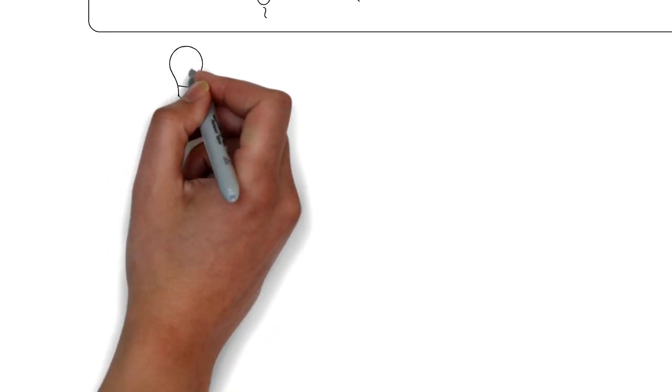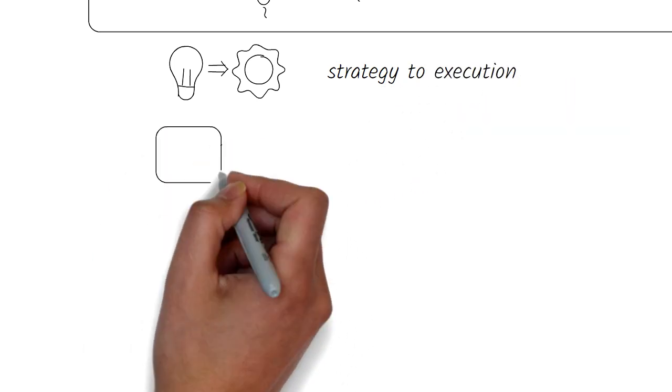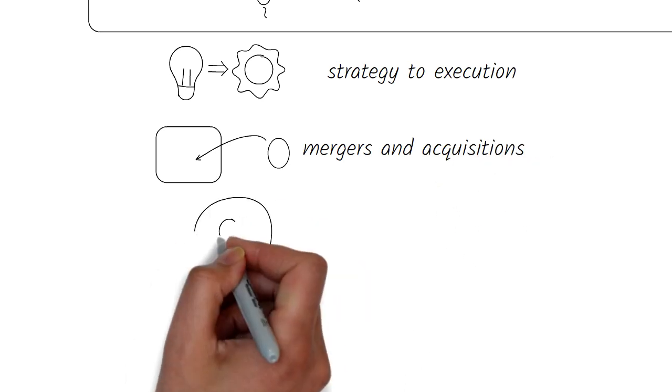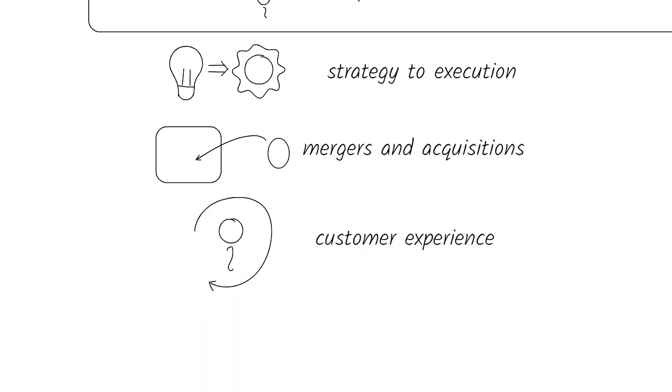There are many other examples of using business architecture. For example, you could use it for efficient execution of strategy, for effective mergers and acquisitions, for improving customer experiences, for reducing cost of operational processes, and a whole lot more.